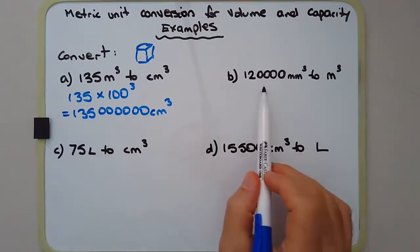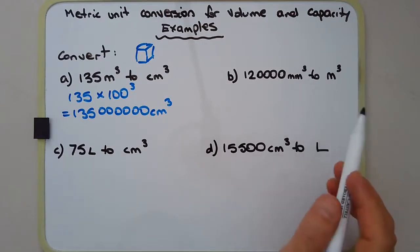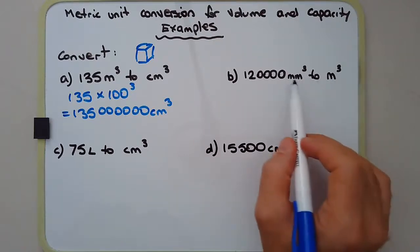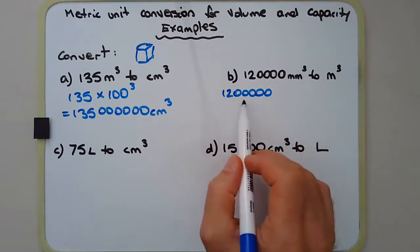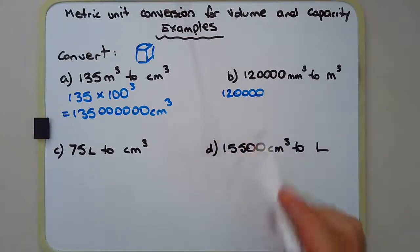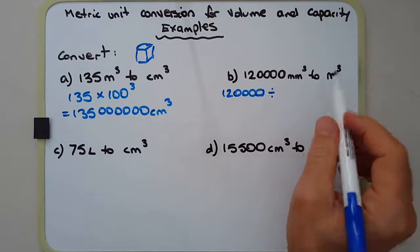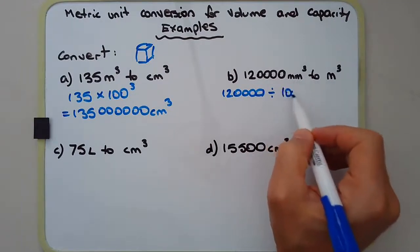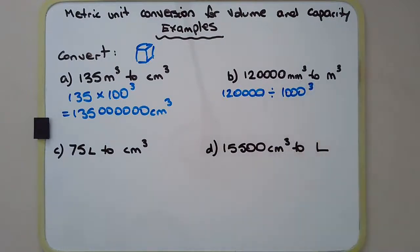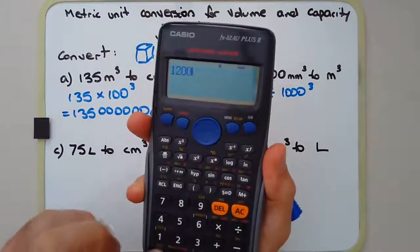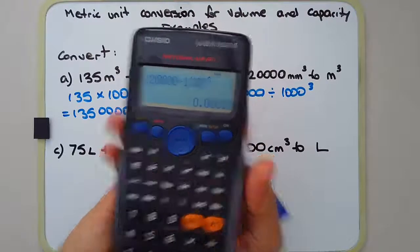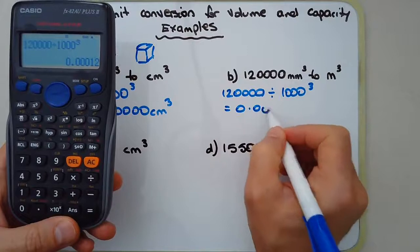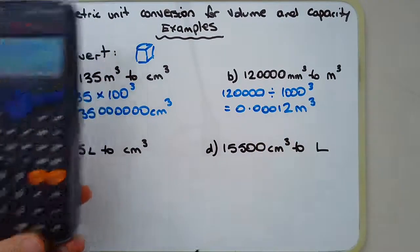Example B: Convert 120,000 cubic millimeters to cubic meters. We're converting a small unit into a larger unit. There are 1,000 millimeters in a meter, and because we're dealing with volume we divide by 1,000³. Using a calculator gives us 0.00012 cubic meters.